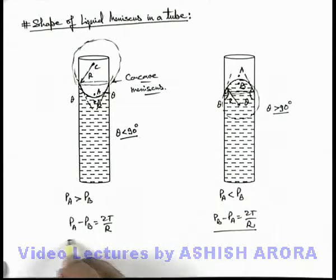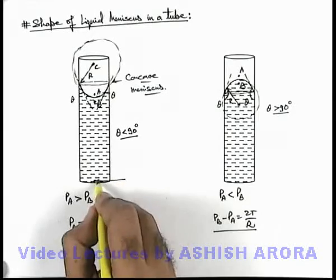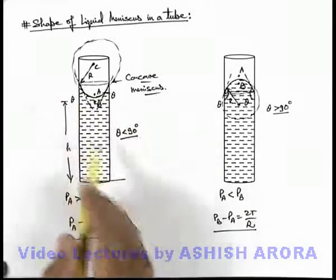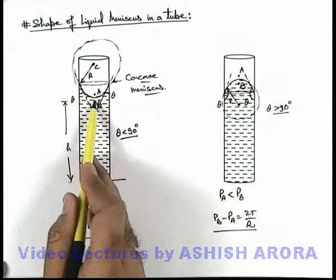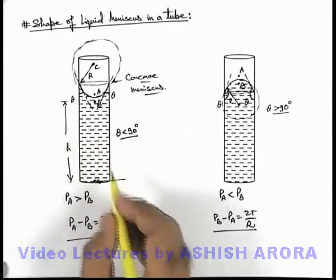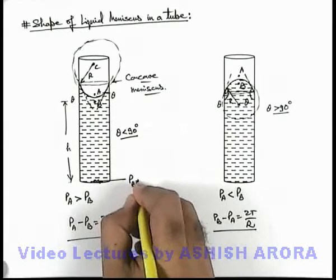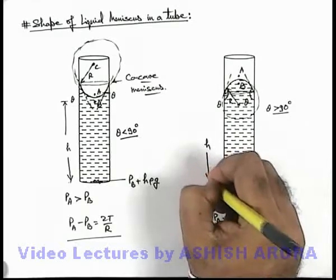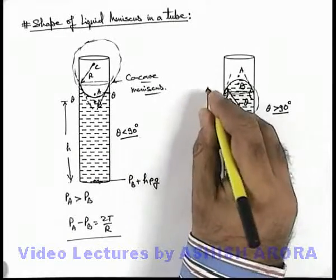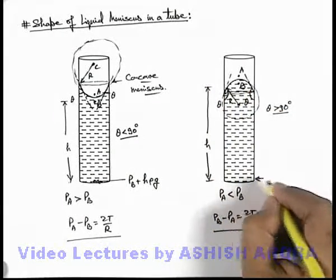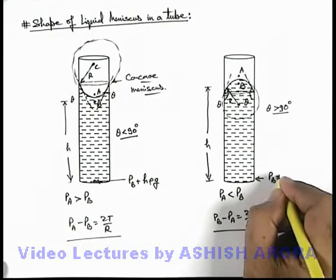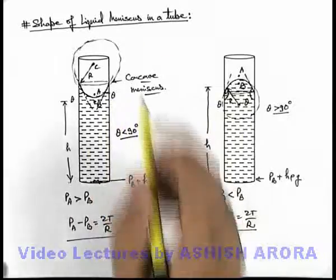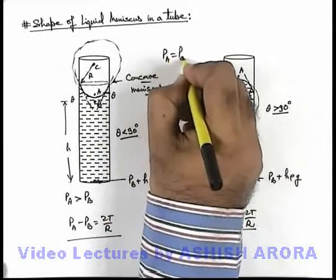And in this situation if we talk about the pressure at the bottom point of the liquid, if liquid is filled up to a height h, so we can say just at a height h above at point B pressure was p_b. Then at the bottom pressure will be p_b plus h rho g. And in this liquid also if the column height is h, then in this situation also at bottom pressure can be written as p_b plus h rho g. But in the 2 situations there is a difference that in both the cases pressure at point A is equal to atmospheric pressure.